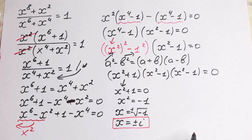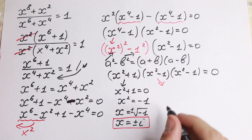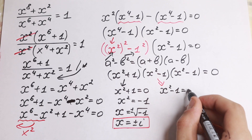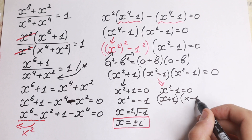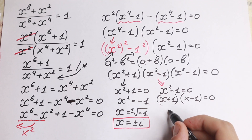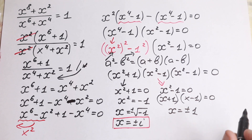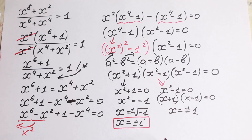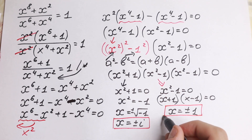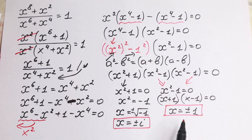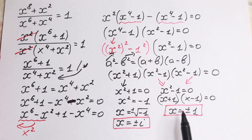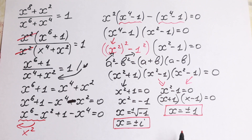Moreover, we have the second equation x² minus one equal to zero. We can write this as (x plus one)(x minus one) equal to zero, giving x equal to plus or minus one. So we have two more roots here. Note that the factor (x² minus one) appeared twice, but it gives the same roots. So as a result: two complex roots and four real roots.